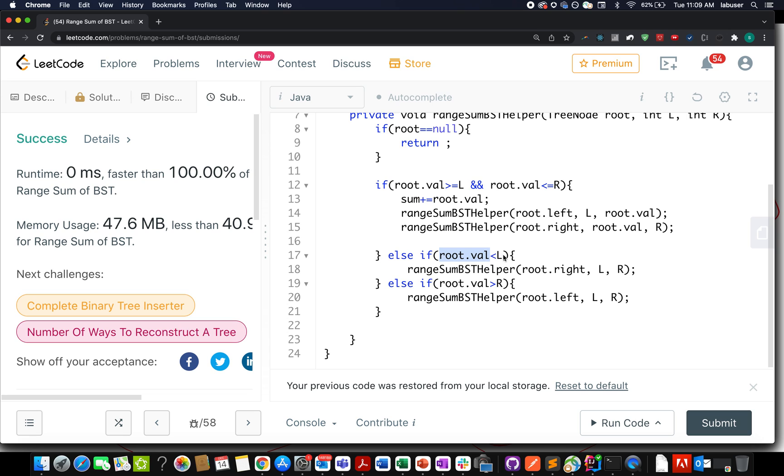Otherwise, I go and check if my root.current value is less than the left range, left possible terminal value. If that is the case, I move towards right. Otherwise, if the current value at the root's node is greater than the right one, the right range value, I move towards its left child. Pretty simple and straightforward. Let's try this up.